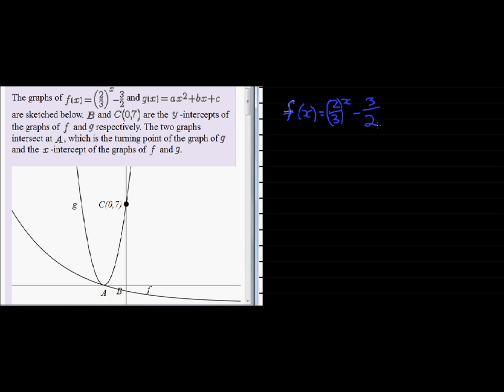So what value can F of X never ever be? Well, we know that 2 over 3 to the power of X. This value is a base and an exponent, and that will never be equal to 0.